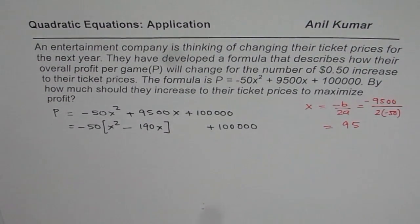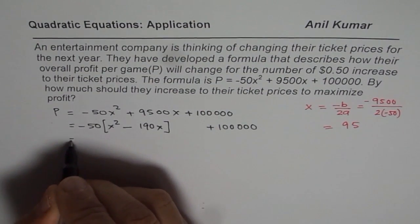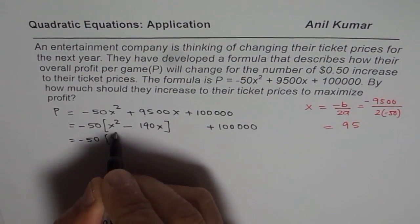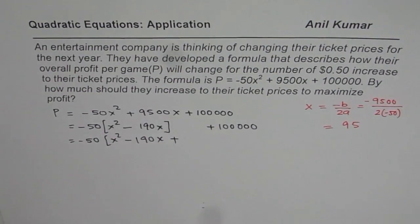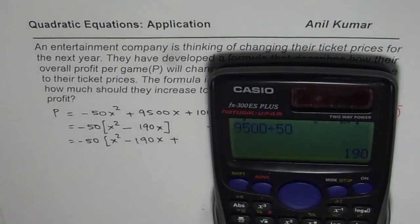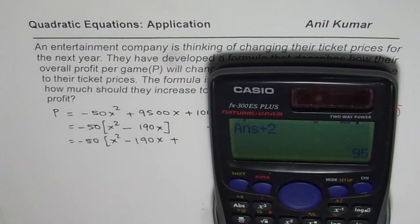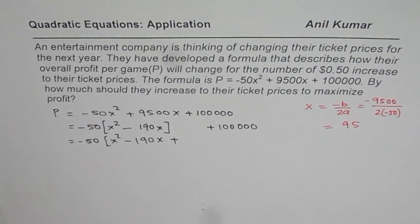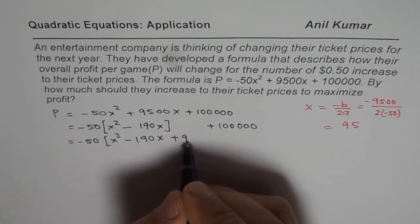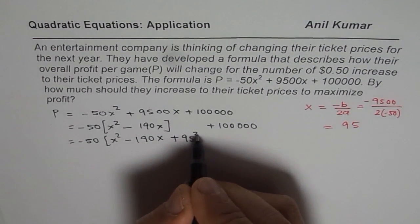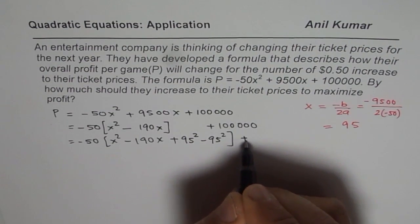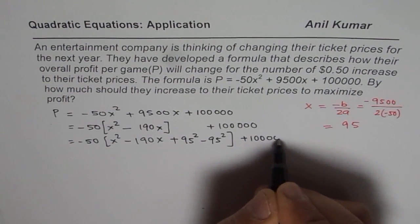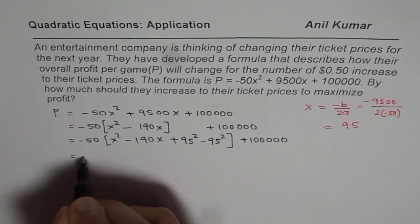The next step is that we have to do half of this. So we have minus 50, x squared minus 190x plus half of 190. So we will just divide this by 2 and get 95. See the use of calculator. We are simply keeping the previous value and using it over and over again. That is how you can save some time in the test also. Important thing to understand.